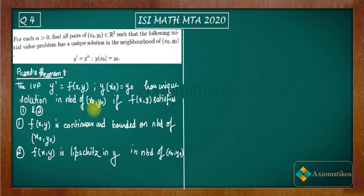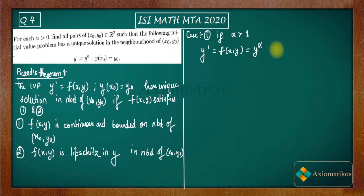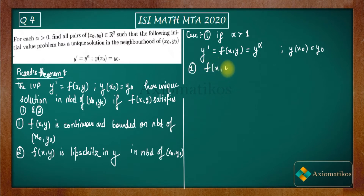I will keep this theorem here for a while so you can read and understand it. Now I'm proceeding to the solution. I'll break this question into three parts. Case one is when alpha is greater than one. In this case, f(x,y) = y^α with the initial condition y(x₀) = y₀.